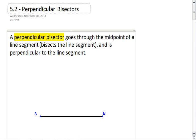Looking at the line segment that we have drawn, we have line segment AB. The first thing you want to do when making a perpendicular bisector is to find the midpoint of your line segment. That's the point that cuts the line segment in half.